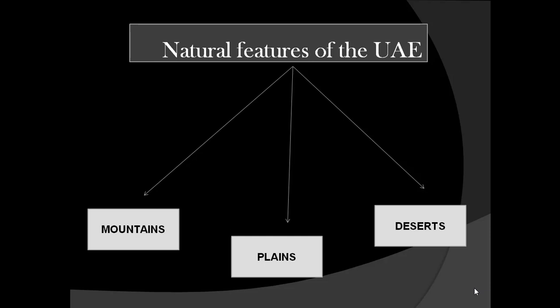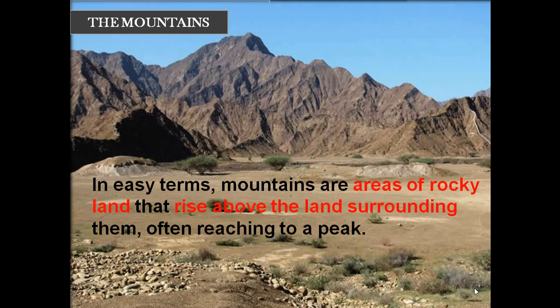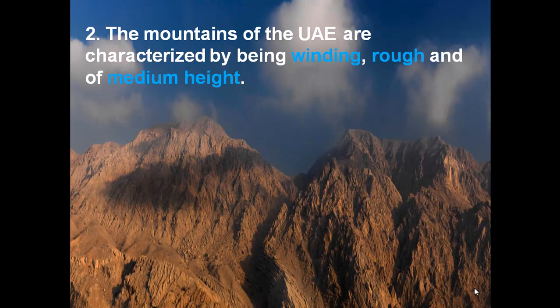Let's discuss mountains first. In the picture, what you see is a mountain of the UAE. In easy terms, mountains are areas of rocky land that rise above the surrounding land, often reaching into a peak — that is how you define a mountain. The UAE mountains are especially characterized by being winding, rough, and of medium height.